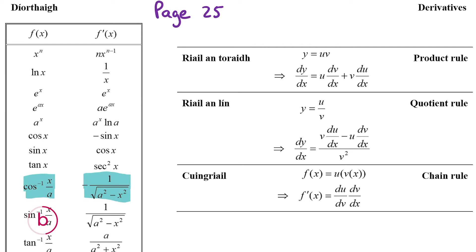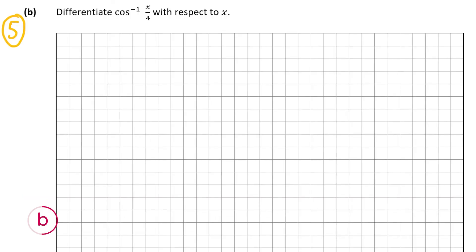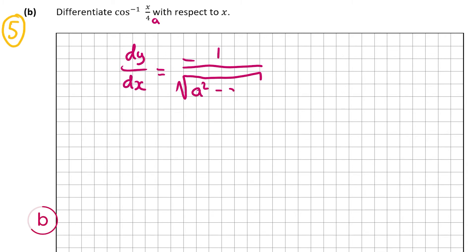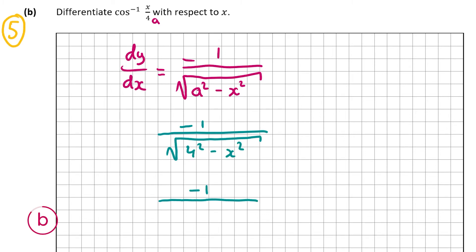In our case x is x and 4 is a. So the formula gives dy/dx equal to minus 1 over the square root of a squared minus x squared. Substituting 4 for a we get minus 1 over the square root of 4 squared minus x squared, and since 4 squared is 16 we can write that as minus 1 over the square root of 16 minus x squared. That is our answer for part b.